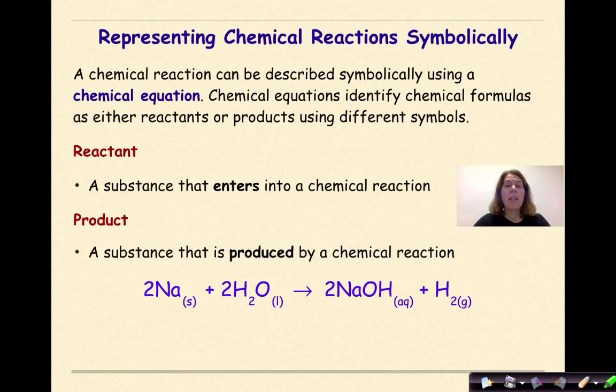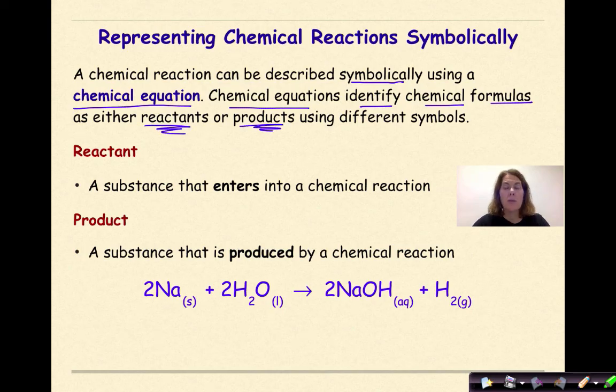Let's look at how we would represent chemical reactions symbolically. A chemical reaction can be described symbolically using a chemical equation. Chemical equations identify chemical formulas as either reactants or products using different symbols. A reactant is a substance that enters into a chemical reaction, typically on the left-hand side. A product is a substance that is produced by a chemical reaction and is typically on the right-hand side.